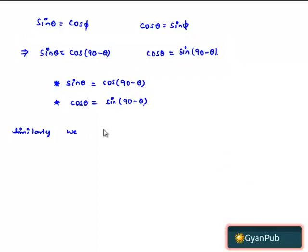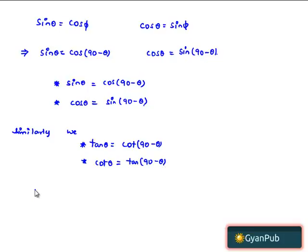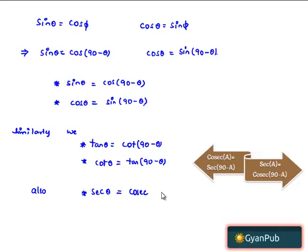Similarly, we have relations in terms of tan and cot: tan theta is equal to cot(90 minus theta), and cot theta is equal to tan(90 minus theta). Also, in terms of secant and cosecant: sec theta is equal to cosec(90 minus theta), and cosec theta is equal to sec(90 minus theta). These are the trigonometric ratios of complementary angles.